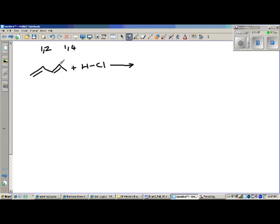1,4 means the addition of H and Cl across carbons that are separated by two carbons. For example, hydrogen adds here, the chlorine would then add carbon 2, carbon 3, carbon 4. So carbons 2 and 3 separate the place of addition of hydrogen and chlorine. We'll see exactly why that is here in just a minute.